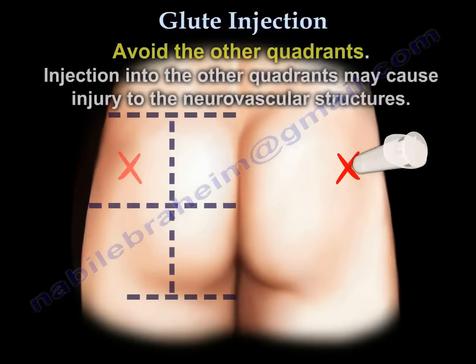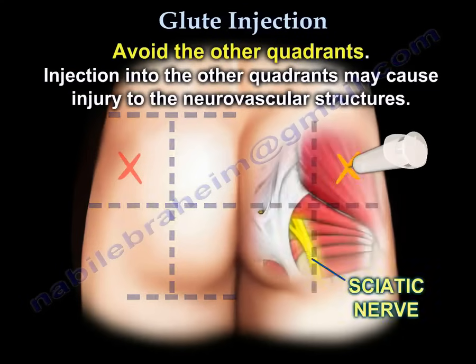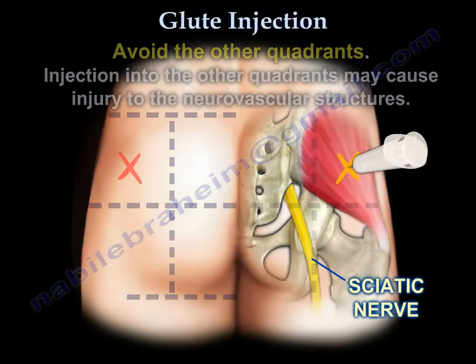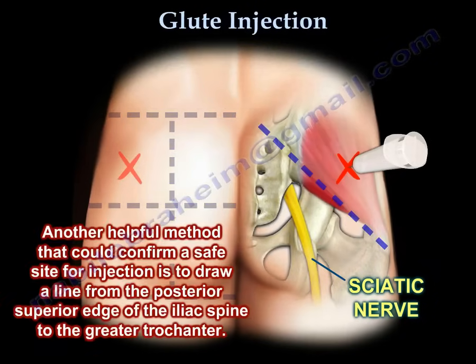Injection into the other quadrants may cause injury to the neurovascular structures — do not inject into the other quadrants, as you may damage the sciatic nerve. Another helpful method to confirm a safe site for your injection is to draw a line.